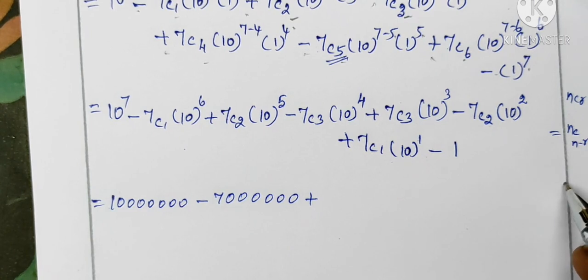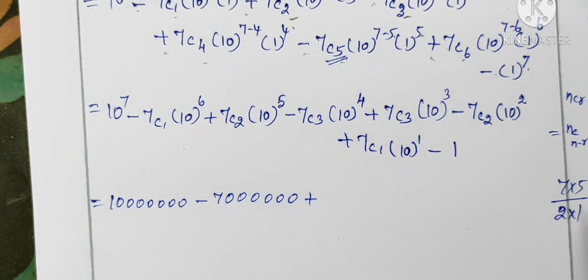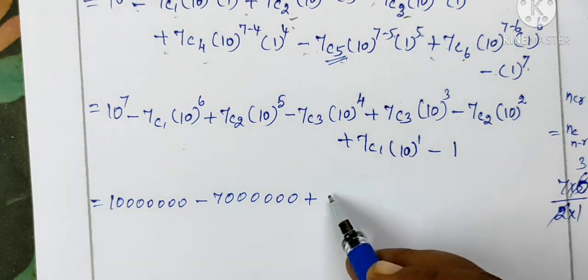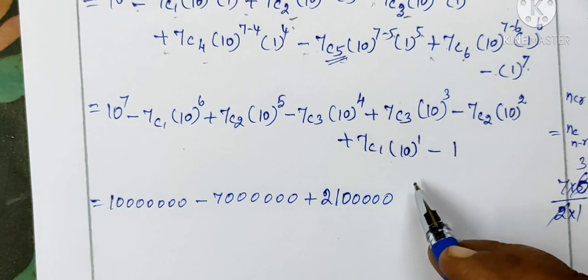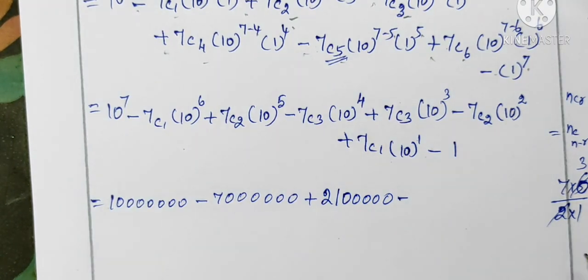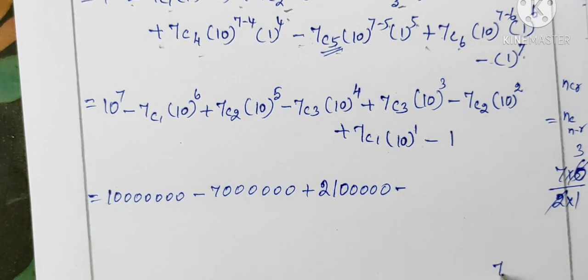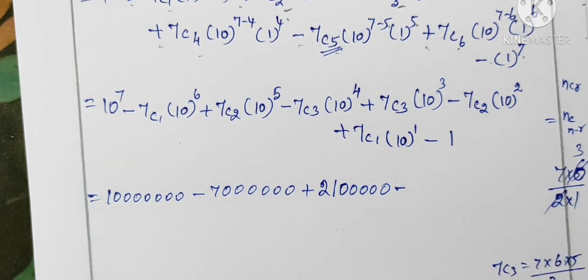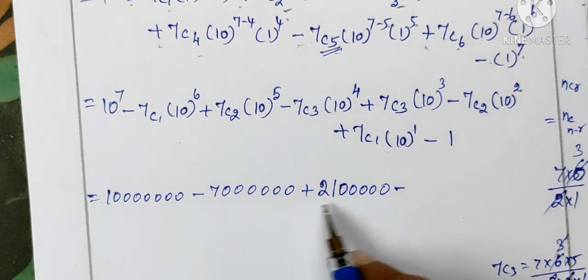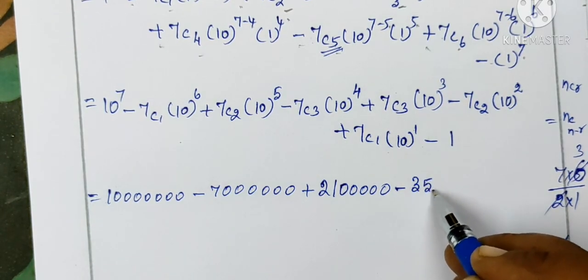7C2 is: 7 into 6 by 2 into 1, cancel this, equals 21. 7C3 is: 7 into 6 into 5 by 3 into 2 into 1, this equals 35.